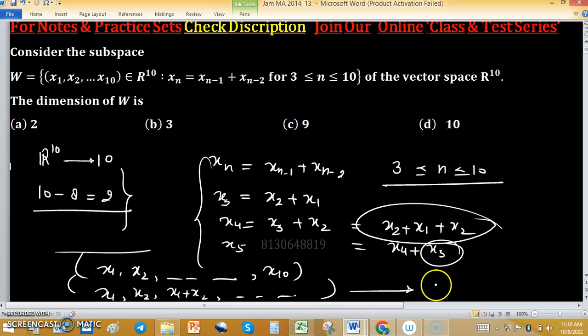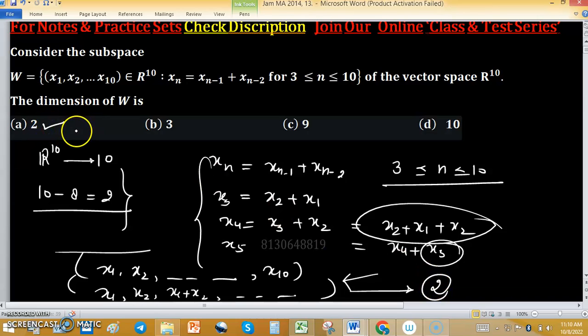So x_1 and x_2 are the independent choices to write elements of the subspace. The dimension is determined by how many positions are independent. We are independent at two places, so the dimension is 2.